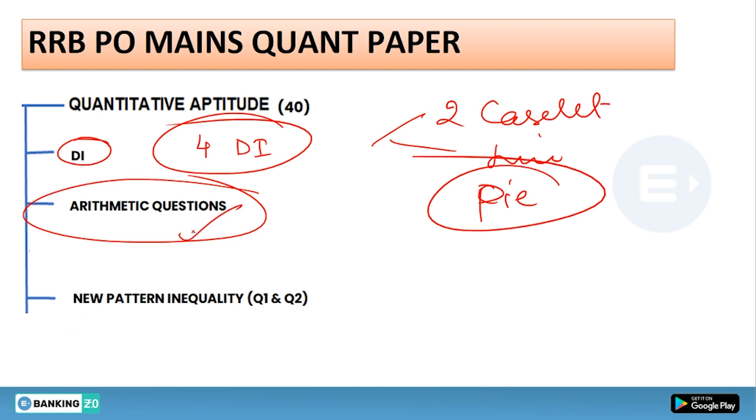In the previous year examination, we have seen four DI was being given to you in which two were caselet and rest of them will be like a line or a pie chart. So these are the things you have to deal with. What I'm trying to say is that you will be given arithmetic portion as well. So this combined new pattern inequality, or you can say Q1, Q2, and arithmetic section will be combined based on arithmetic topics.